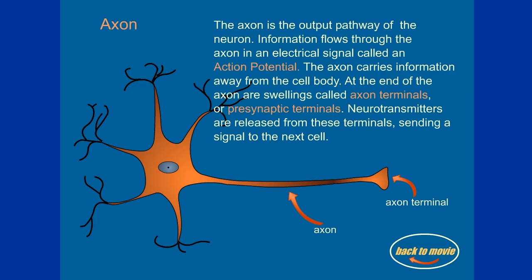Axon. The axon is the output pathway of the neuron. Information flows through the axon in an electrical signal called an action potential. The axon carries information away from the cell body. At the end of the axon are swellings called axon terminals or presynaptic terminals. Neurotransmitters are released from these terminals, sending a signal to the next cell.